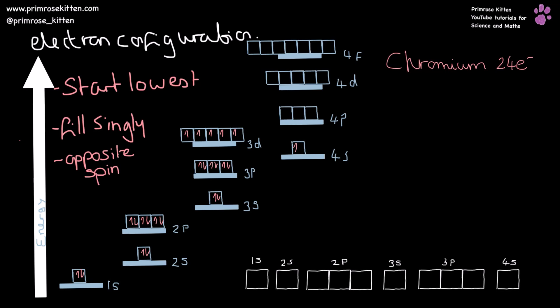But this is where things start to get a bit odd. I have now filled the 3d orbital even though the 4s orbital isn't completely full — which goes against the rule that you must fill the lowest orbital before moving up. The reason is that filling this way gives every orbital in the 3d subshell one electron. Having a fully half-filled subshell — where every orbital has the same spin — is more stable than the alternative of having two electrons in 4s and only four in 3d.